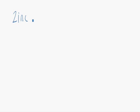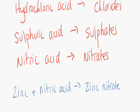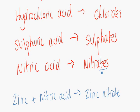Zinc can react with nitric acid and it'll make zinc nitrate. Look, nitric acid makes nitrates and all we do is we take that name and we put it after the metal name.